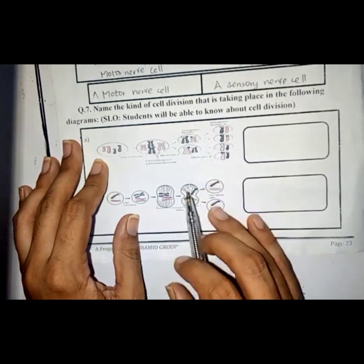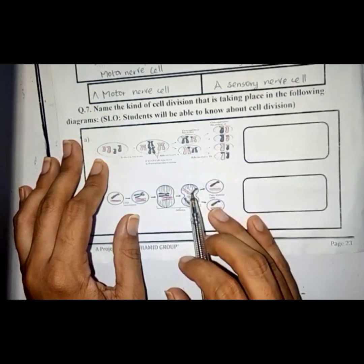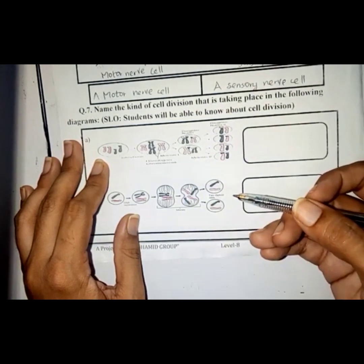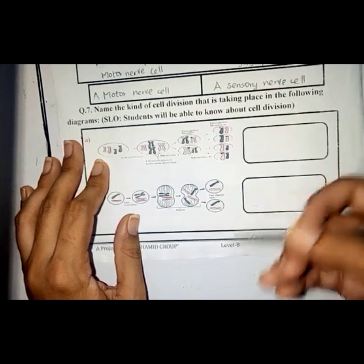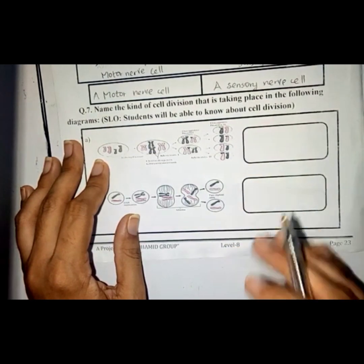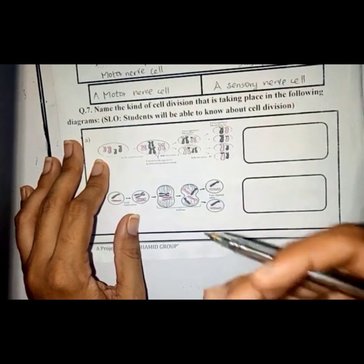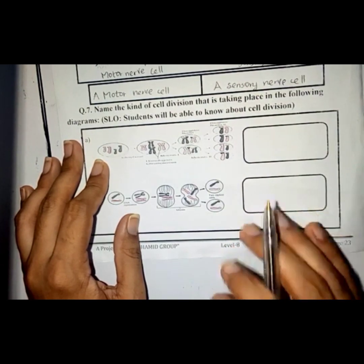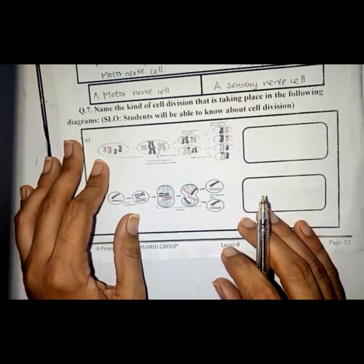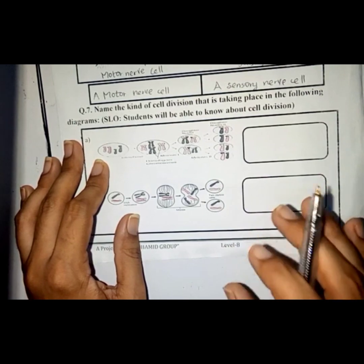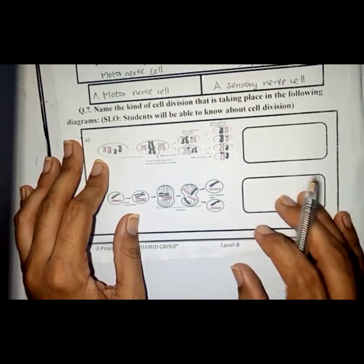Students, meiosis is a type of cell division which occurs only within the reproductive organs, meaning within the sex cells of the body. So students, meiosis is a type of division in which four haploid daughter cells with half the number of chromosomes will be produced from the parent cell.